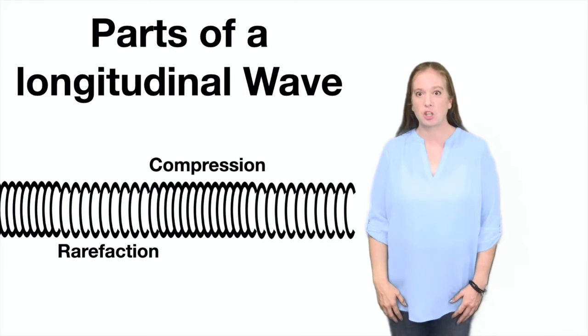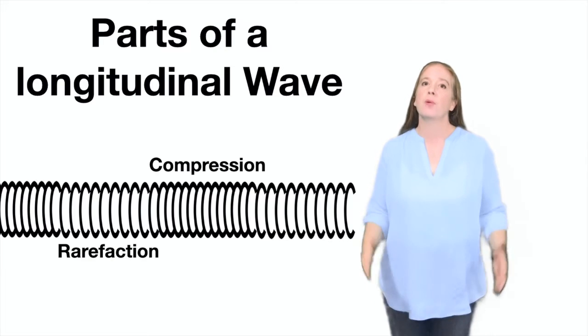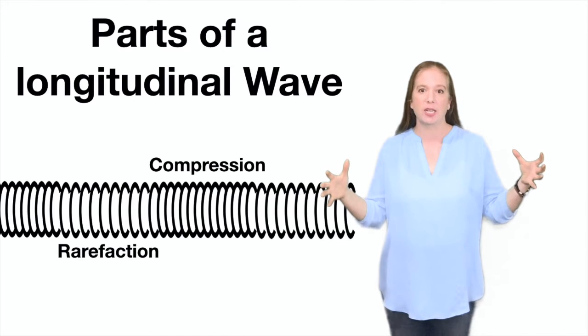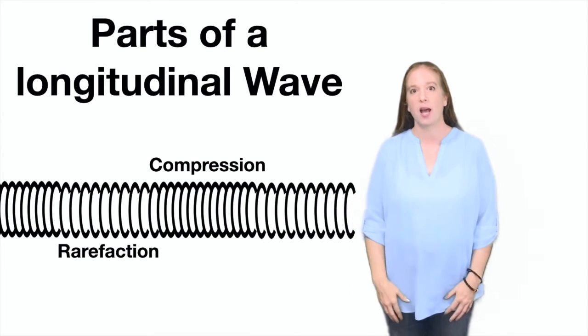The parts of a longitudinal wave include compression and rarefaction. Compression is the distance between the wave is shorter or compressed, and in rarefaction the distance of the wave is more spread out.